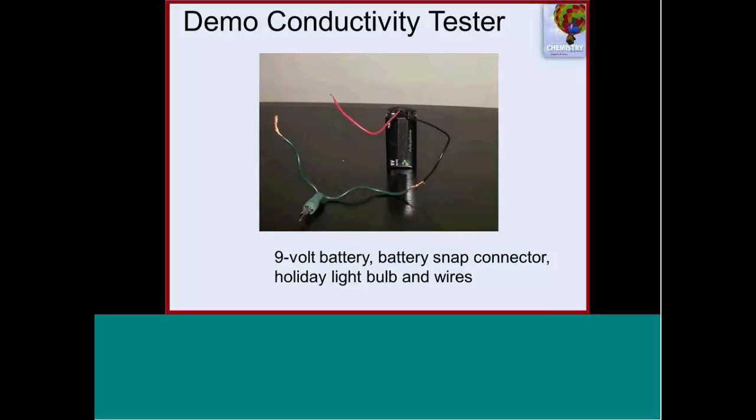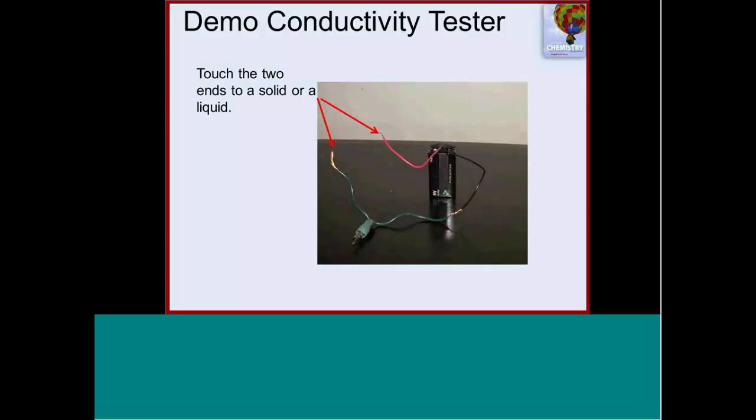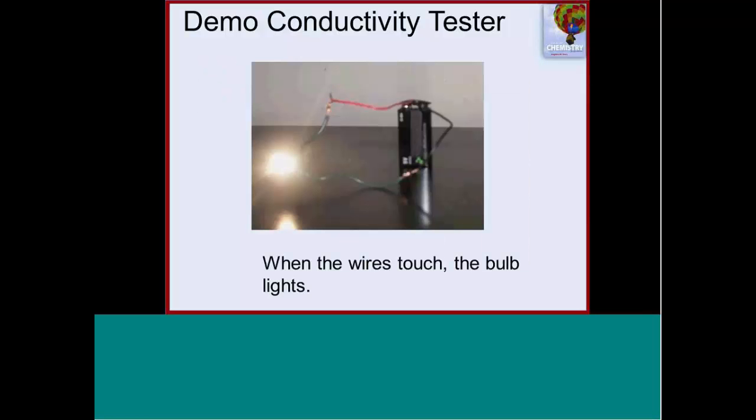So the way we're going to do the lesson is we're going to use a simple conductivity tester. This is a little 9-volt battery that has a snap connector on top. And it's hooked up with one end to one of these holiday light bulbs. And on the next slide, what you see is if you connect the two ends, you actually see the light lights.